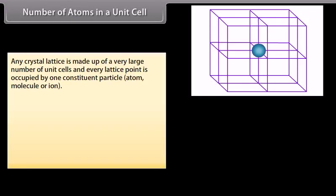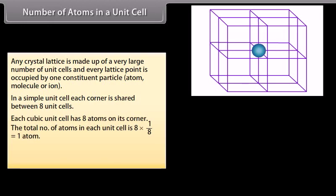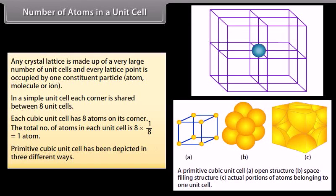Any crystal lattice is made up of a very large number of unit cells and every lattice point is occupied by one constituent particle — atom, molecule, or ion. In a simple unit cell, each corner is shared between 8 unit cells. Each cubic unit cell has 8 atoms on its corners, so the total number of atoms in each unit cell is 8 × (1/8) = 1 atom. The primitive cubic unit cell has been depicted in 3 different ways.